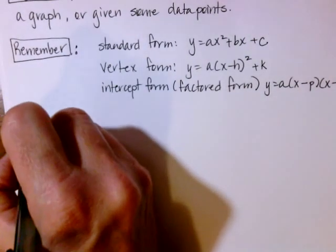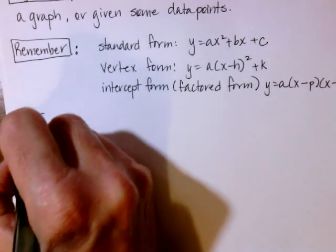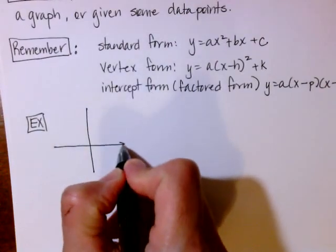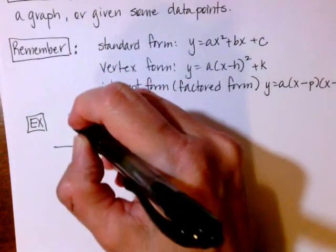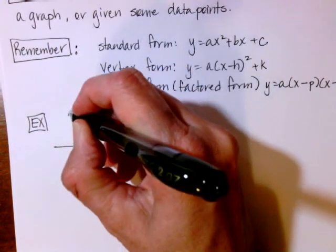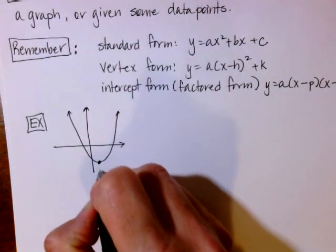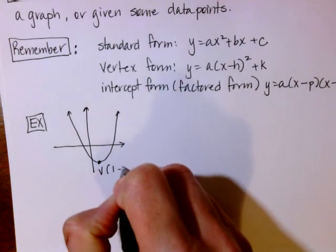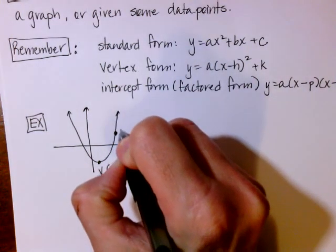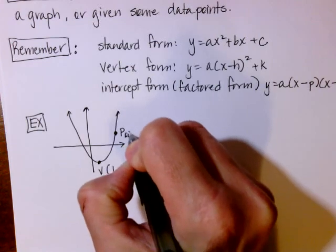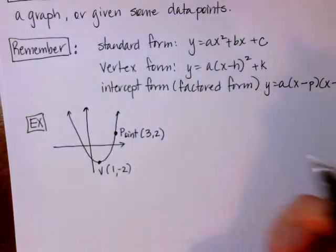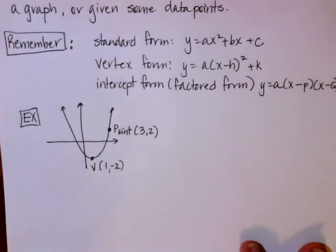Intercept form is y equals a times x minus p times x minus q. Notice that the same a is in every equation. So that is the information we have for our graphs. Let's start with an example. In this particular problem you're going to be given a graph. I'm going to have a vertex of (1, −2) and an additional point P with coordinates (3, 2). And that's all I know — I want to be able to write the equation.